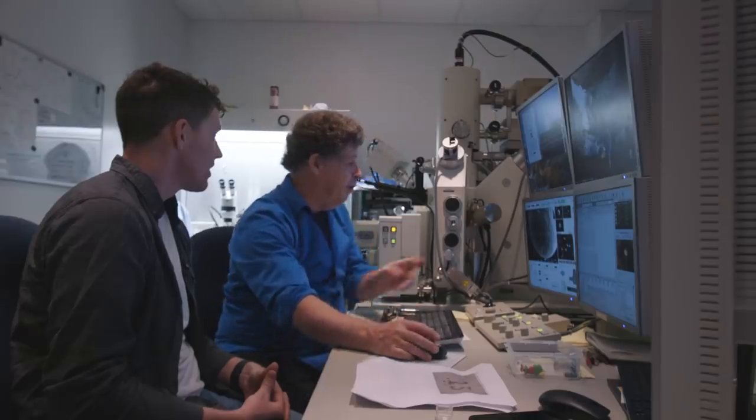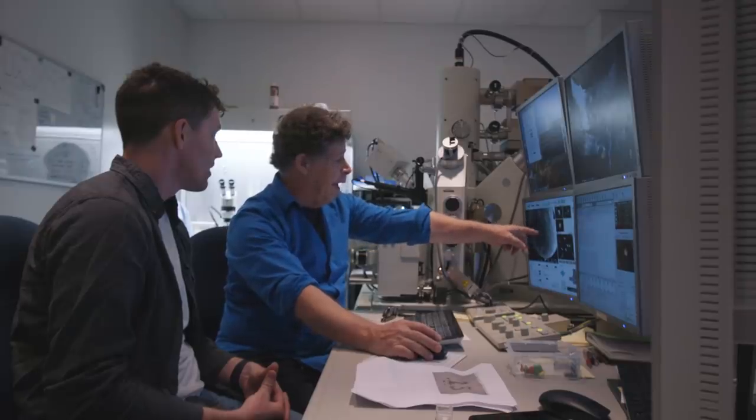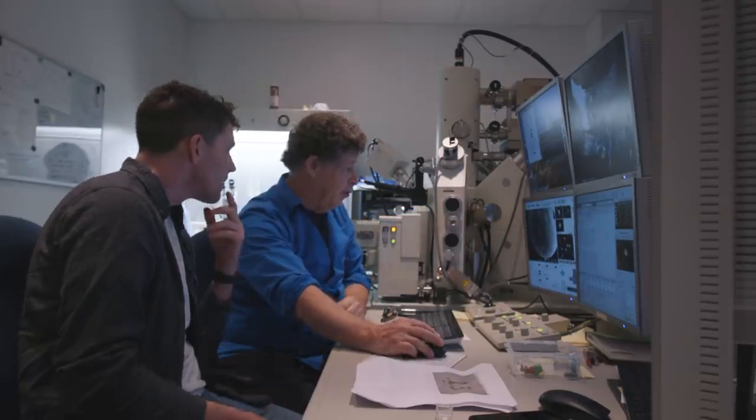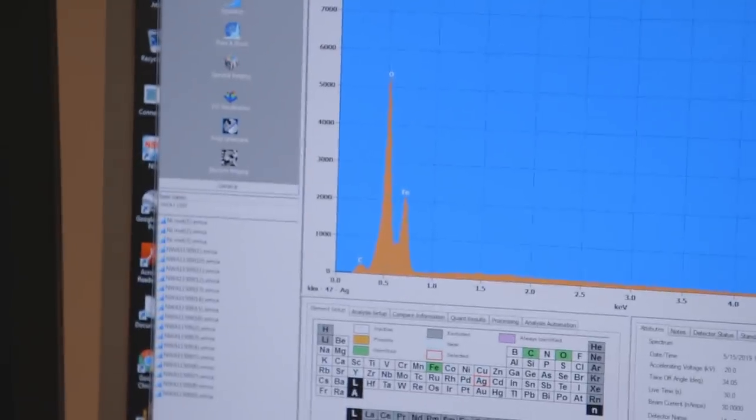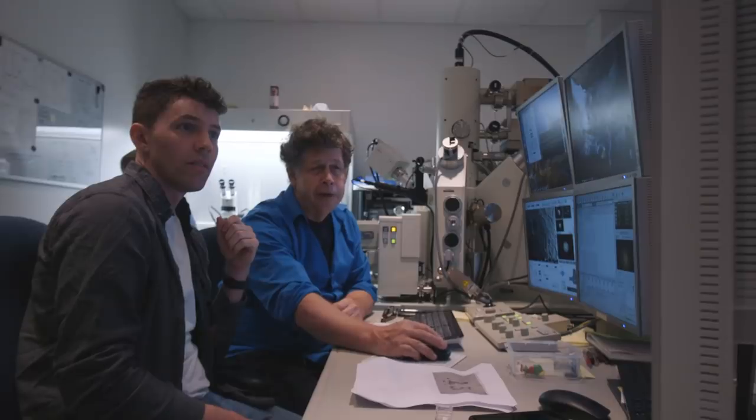So here's a second particle. Again, we see this same pattern. These little flattened crystals on the outside, which again are magnetite. Over here, iron oxide, right? It's probably terrestrial contamination.